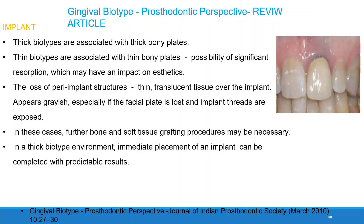Gingival biotype and implant consideration. Thick biotypes are associated with thick bony plates. Thin biotypes are associated with thin bony plates and possibility of significant resorption impacting aesthetics, loss of peri-implant structure, thin translucent tissue over the implant, and grayish appearance especially when the facial plate is lost and implant threads are visible. In these cases, further bone and soft tissue grafting procedures may be necessary.